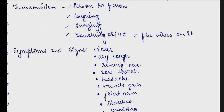How can we get swine flu? It spreads through person-to-person transmission — someone coughing, sneezing, or touching an object with the flu virus on it, similar to how regular influenza spreads. If you haven't studied influenza, please visit that lecture in the playlist section.